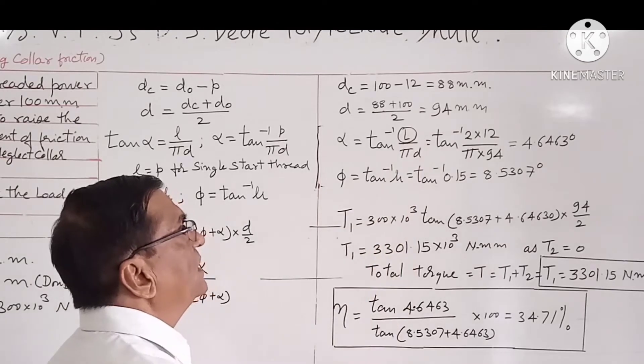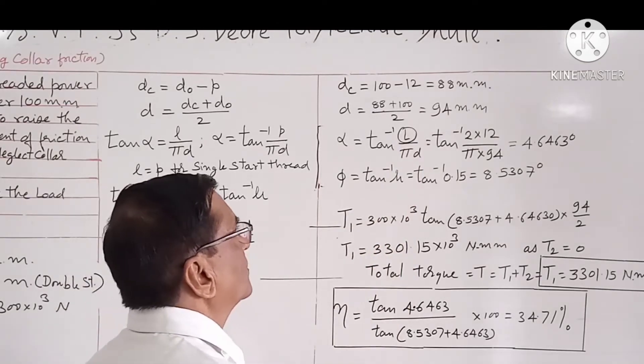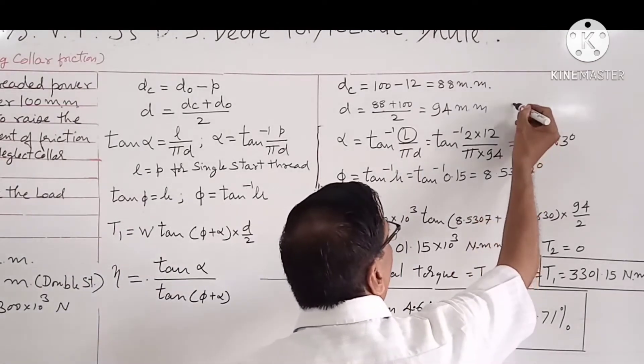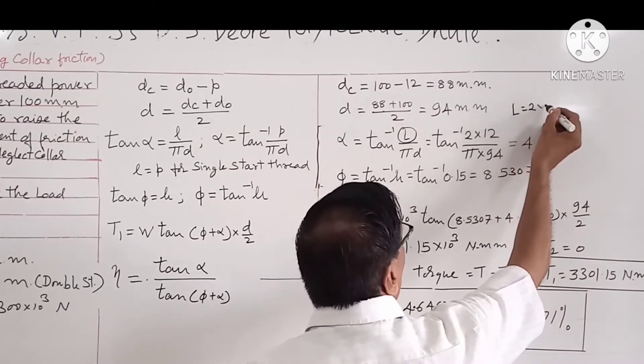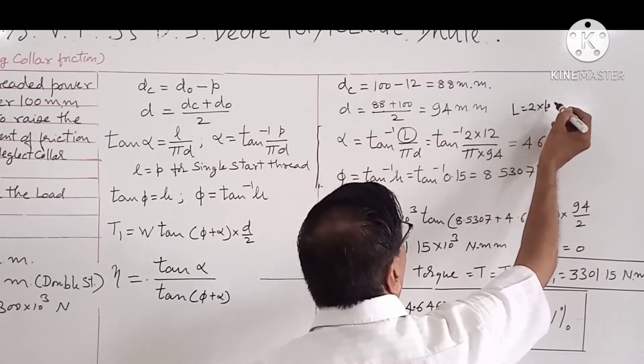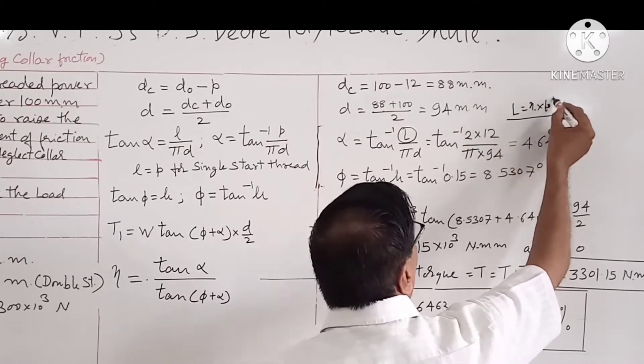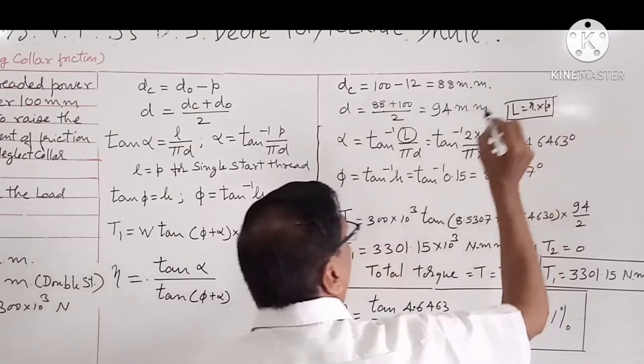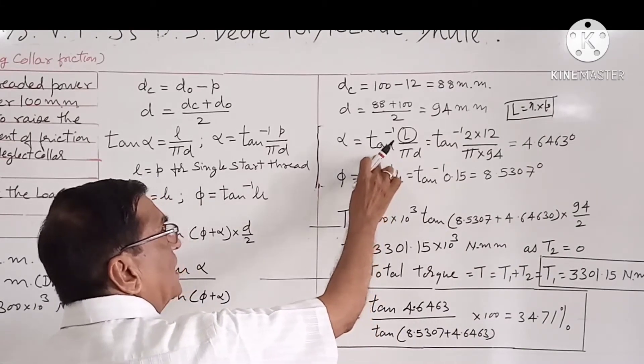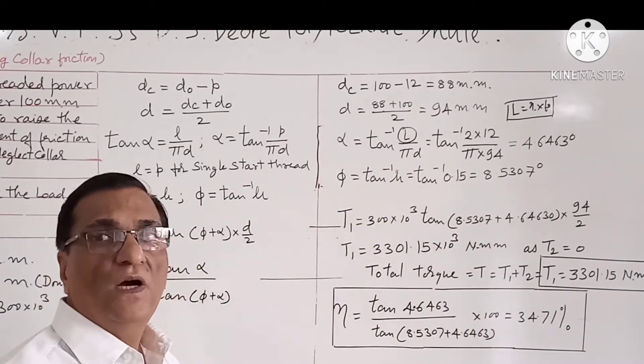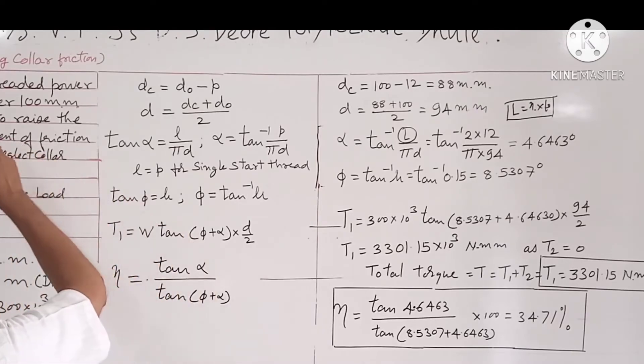We have to take lead L = 2 × pitch = n × p, where n is the number of starts. So care should be taken while calculating the value of α, because the screw is double started.